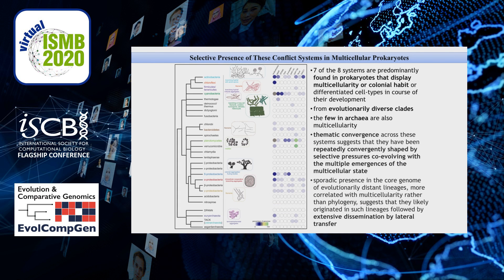Intriguingly, seven of the eight systems we describe here are primarily confined to evolutionarily diverse bacterial clades and a few archaeal lineages that display multicellularity and complex life forms. This thematic convergence suggests that these systems have been repeatedly and convergently shaped by selective pressures co-evolving with the multiple emergences of the multicellular state and then disseminated extensively by lateral transfer.